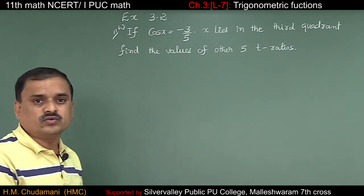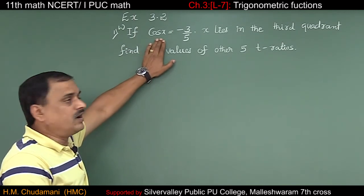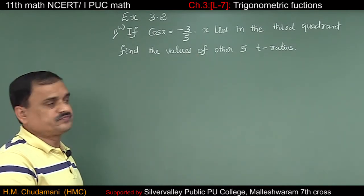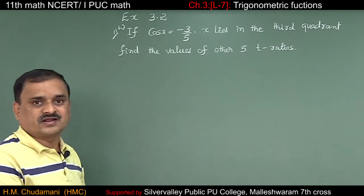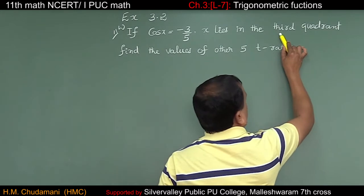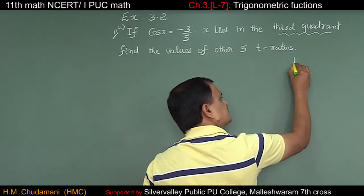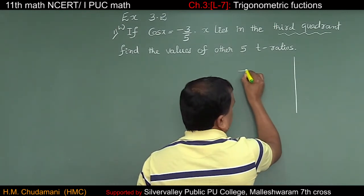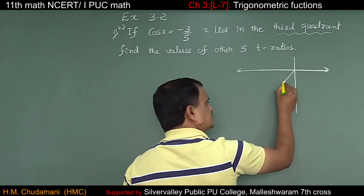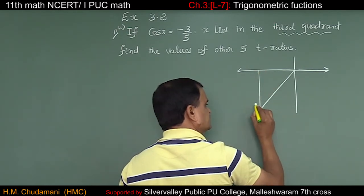Exercise 3.2, worked example. If cos x = −3/5 and x lies in the third quadrant, find the values of the other trigonometric ratios. Recalling the ASTC rule: in the third quadrant, only tan and cot are positive.